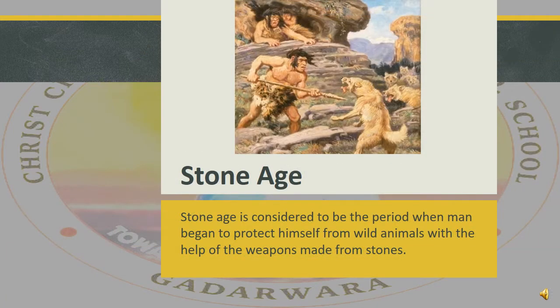Now let's understand the Stone Age. You must know about pre-historical conditions of a semi-city, region or country through geographical discoveries and through tools, coins, etc., found in excavation. These things present the glory of that period authentically. The Stone Age is considered to be the period when men began to protect themselves from wild animals with the help of weapons made of stones.